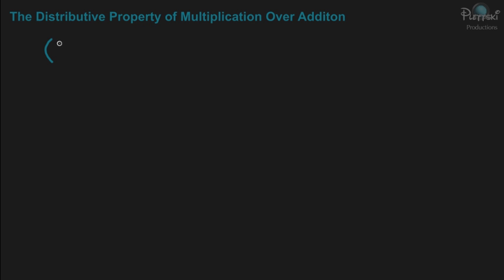The distributive property of multiplication over addition. What this property states is if you have a set of parentheses, and you have a couple numbers inside — let's say 2 plus 3 — and then you multiply that term inside the parentheses by a number, let's say 4.